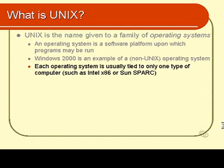An example of a computer type might be a Sun SPARC workstation or an Intel x86 family of processors. Intel x86 processors include the 386, 486, Pentium, Pentium 2, Pentium 3, and so on. As far as UNIX is concerned, Linux will only run on Intel x86 processors, while Solaris, produced by Sun Microsystems, will only run on Sun workstations. You'll also find that most application packages will only run on one operating system, so a package bought for Windows will not run on Linux, and vice versa.